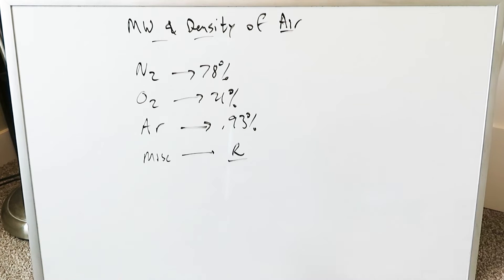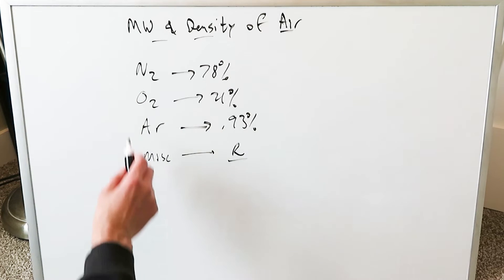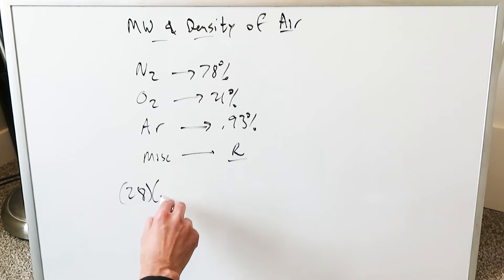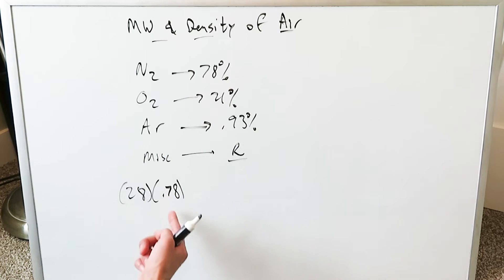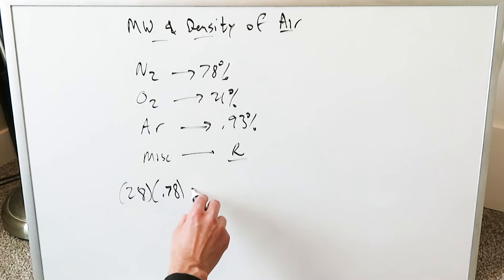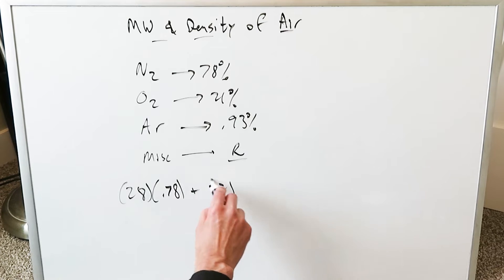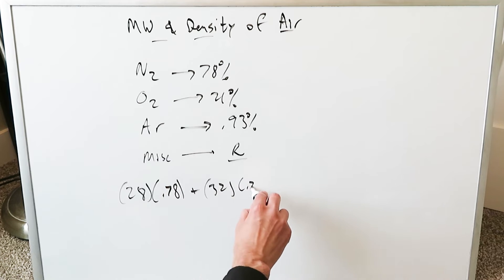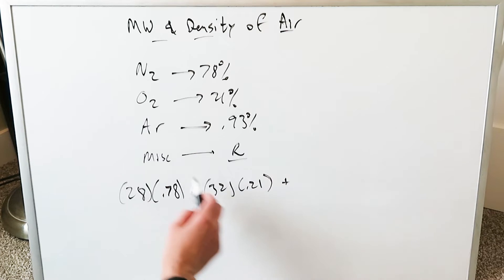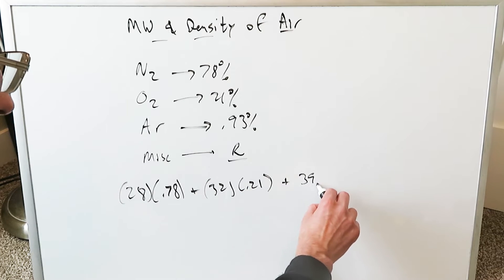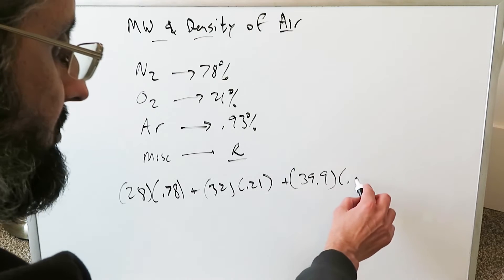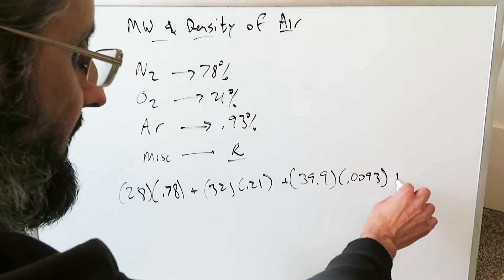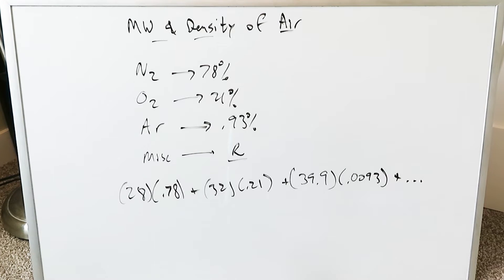The calculation will be based on the molecular weights of these. Nitrogen is 14 times 2, it's 28, times the proportion 0.78 — that's 78 divided by 100 — plus oxygen, the molar mass of diatomic oxygen, is 32, times 0.21, plus argon, that's 39.9, times 0.0093.